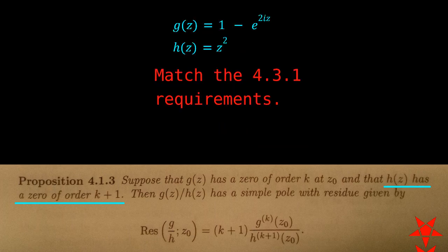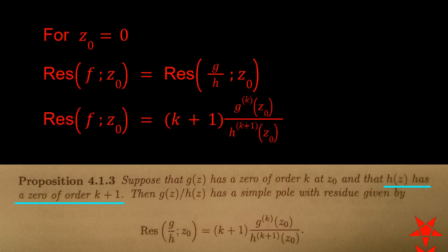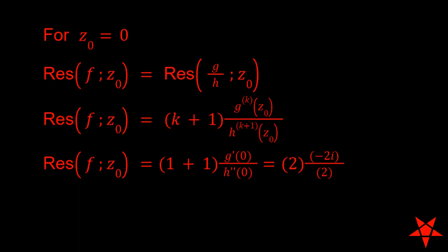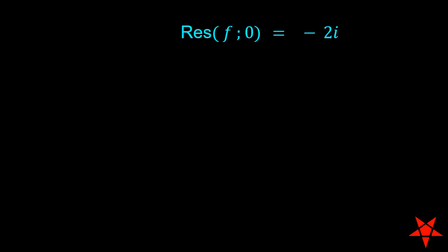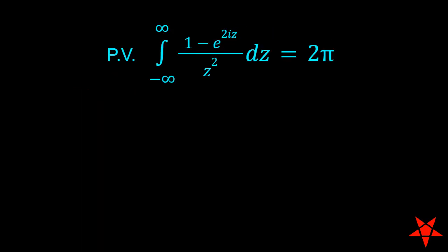Thus, the functions g and h match the requirements for use of proposition 413. So we can use the listed formula for calculation of the residue of f at the origin. Inserting k equals 1 along with the values of g prime and h double prime evaluated at z naught equals zero gives us minus 2i for the residue of f at zero. Returning to the Prop 4311 formula for principal value, consolidating some i's and some minus signs, and we get 2 pi for the principal value of the integral of 1 minus e to the 2i z over z squared from minus to positive infinity.